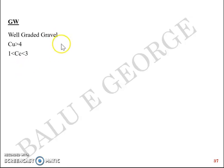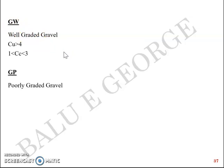A well-graded gravel (GW) is when the Cu value is greater than 4 and the Cc value falls between 1 and 3. Cu is the uniformity coefficient (D60/D10) and Cc is the coefficient of curvature. So if more than 50% is retained on 4.75 mm and Cu > 4 and Cc is between 1 and 3, it's GW. GP is poorly-graded gravel — anything that doesn't fit the GW criteria is classified as GP.